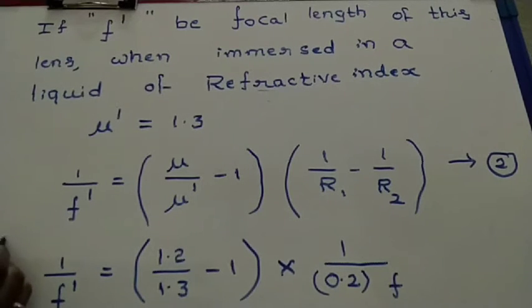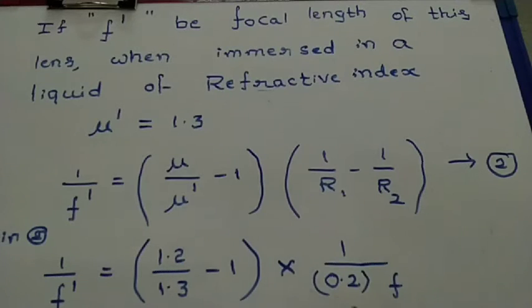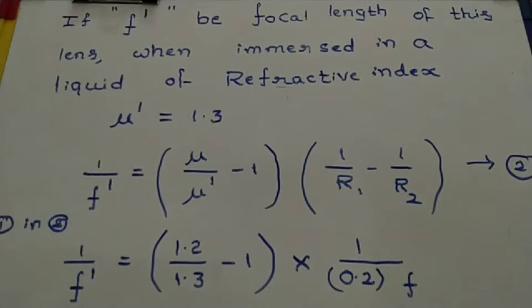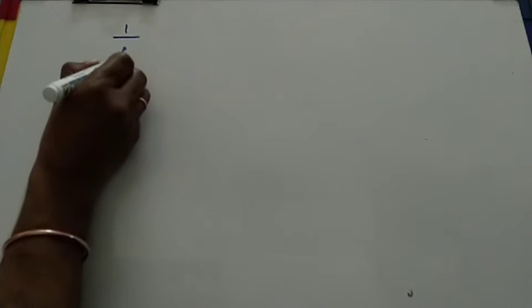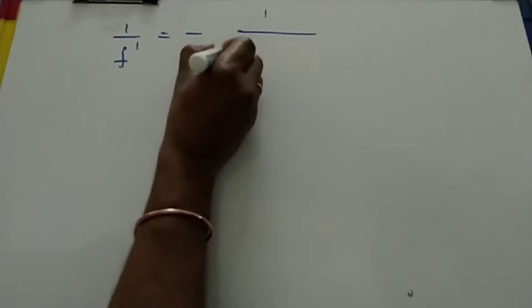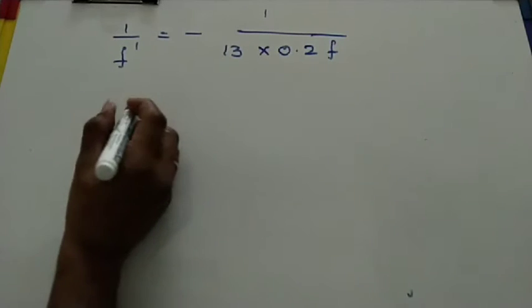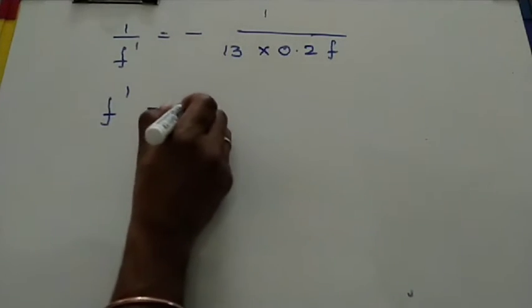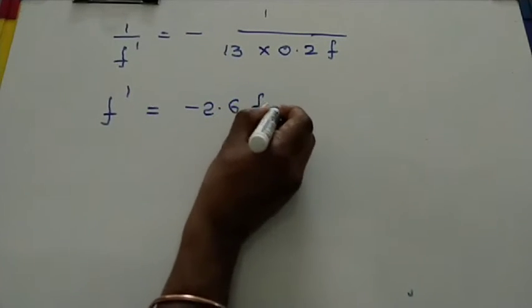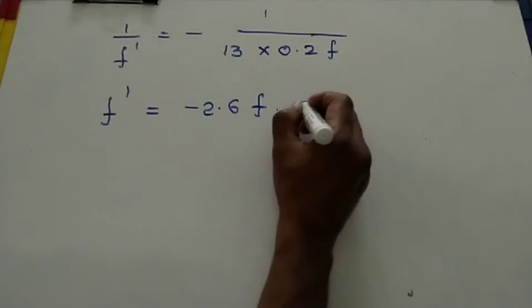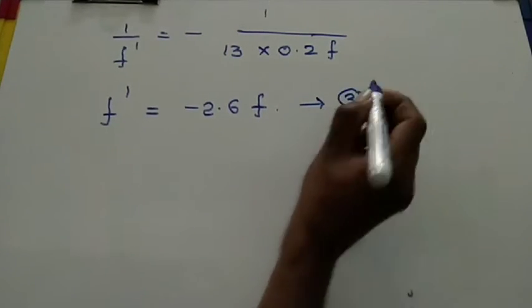Dividing equation 1 by equation 2, we get: 1/f' = -1/(30 × 0.2 × 0.2 × f). Therefore, f' = -2.6f. Consider this equation number 3.